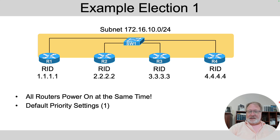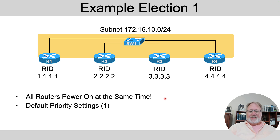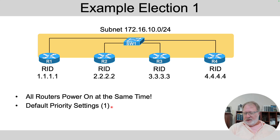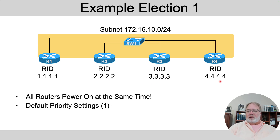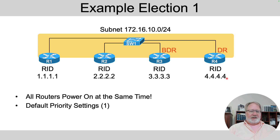I'm going to walk you through three different examples of the DR election with four routers connected to the same subnet, 172.16.10.0. In this first case, all routers power on at the same time with default priority settings of one, so they tie on priority. They're all sending hellos, seeing each other's hellos, and they see they're tying on priority. Looking at the router IDs, clearly R4 has the highest router ID and R3 has the next highest. So R4 is elected as the DR, R3 is elected as the backup DR, and the other two routers are DR others.